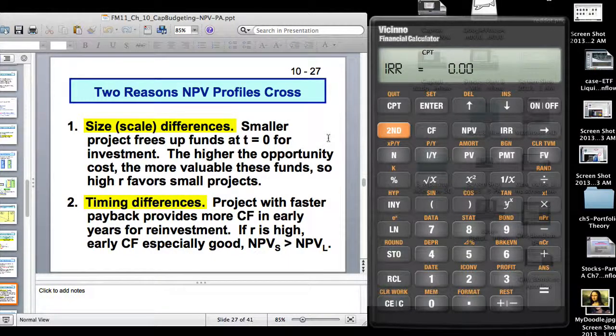So now we are getting into some of the subtleties of capital budgeting. Couple of reasons why NPV profiles cross and why managers actually do not like NPV. It's all intuitive stuff. One is size or scale differences. If you have a big scale difference between two projects, the smaller projects free up funds at t equals zero for investment. A high discount rate actually favors small projects. And so you can have NPV profiles cross as the interest rate changes from zero to theoretically infinity.